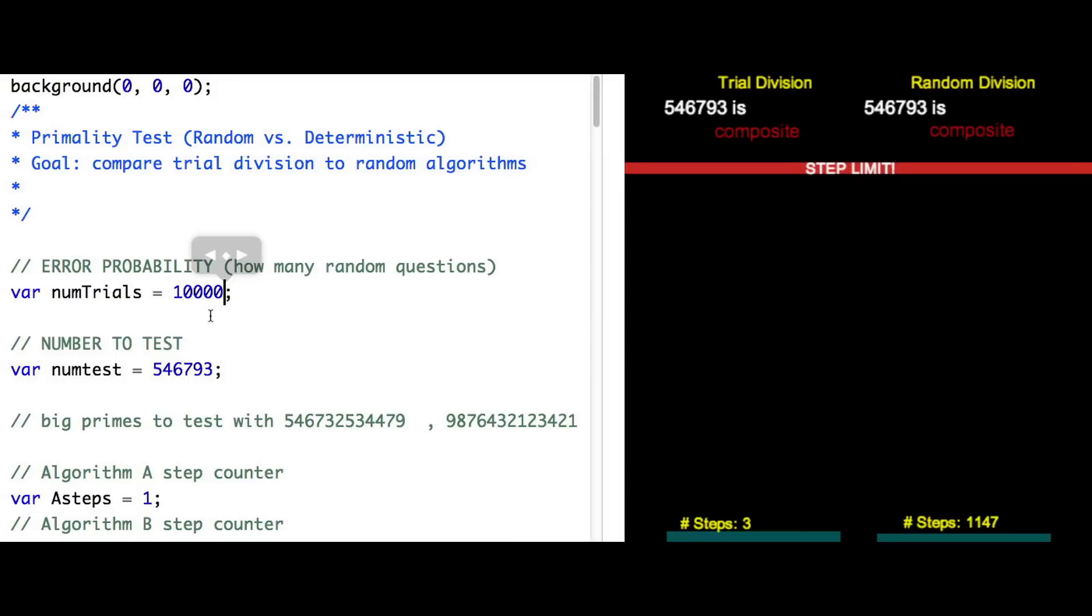But with huge input size, I need thousands of random tests for this to be accurate. So we haven't actually improved the number of steps needed. Our trial division method still seems better.